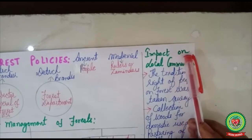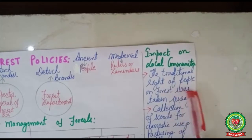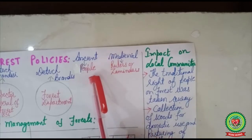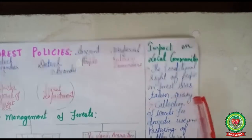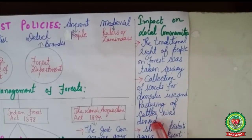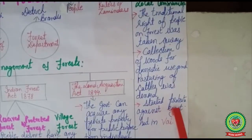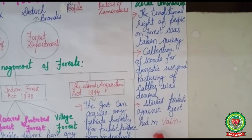Now we will discuss the impact of the forest policy on local communities. The traditional rights of people over forests were taken away, as we discussed — those rights that existed in ancient times were removed by these legislative acts. Collection of wood for domestic use and pasturing of cattle was denied. The people could not use the trees for their domestic purposes. People started protest against the government, but all protests were in vain and were easily crushed by the British government. I hope you have understood this topic. You are advised to make notes of the above topics. Thank you.